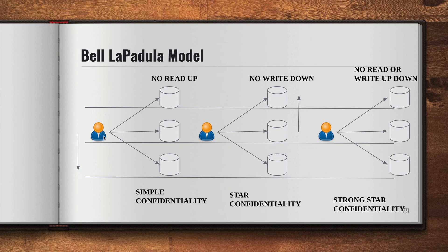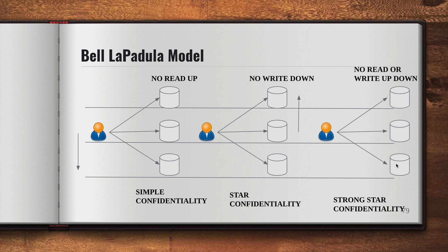Let's look at the diagram. In the Simple Confidentiality rule (no read up), the user can read on the same level and below. In the Star Confidentiality level, the user can write on the same level and the upper level, but not down. In the Strong Star Confidentiality level, the user can read and write on the same level only — not at the top, not at the bottom.